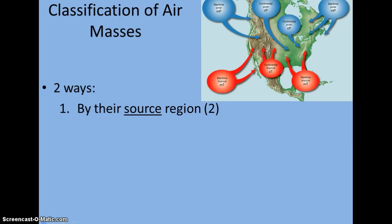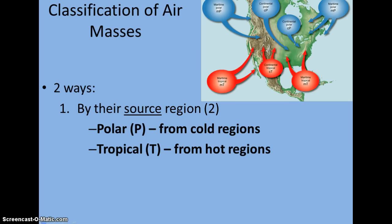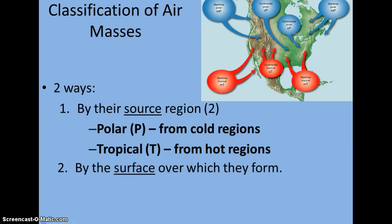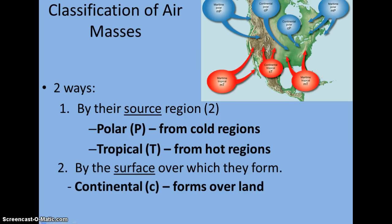We classify our air masses in two different ways. The first is by their source or the region in which they develop, and the two different types of regions are either polar or tropical. A polar air mass comes from the colder regions near the poles; tropical is the opposite — it forms in warmer regions near the equator. The second way we classify air masses is by the surface in which they form: are they forming over water or over land?